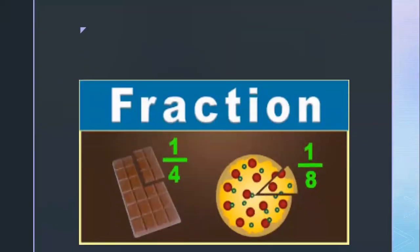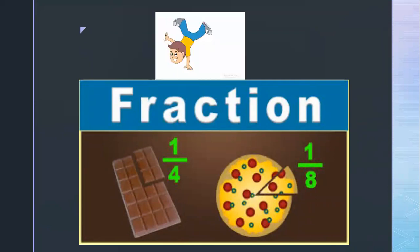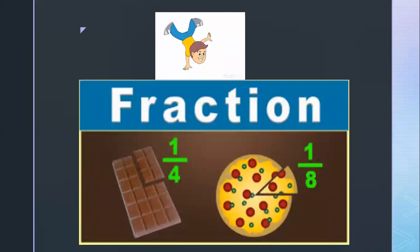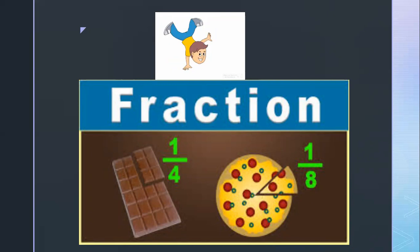So fractions — here is an image for you. There is a chocolate and a pizza. Suppose you are having one chocolate and you have to share it among four of your friends. You will divide it into four pieces, so your fraction is one upon four. Same way, if you are having one pizza and you want to divide it among eight of your friends, then it is one upon eight. This is how fractions are useful in our real life.